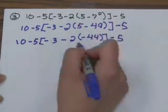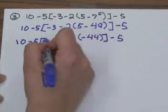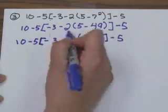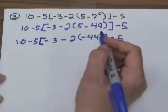Now that we're done with those grouping symbols, we still have the brackets. We want to stay inside there and complete all that work first before we deal with the outside numbers.